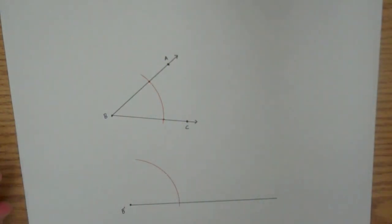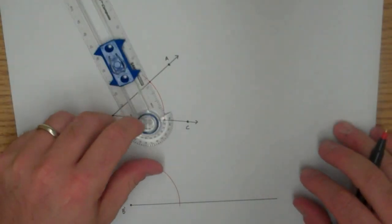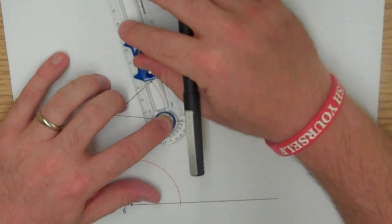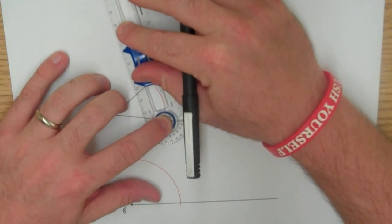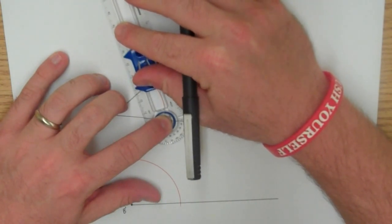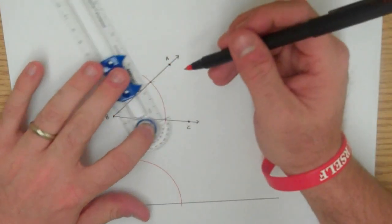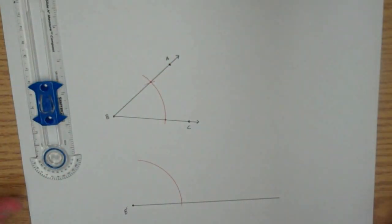And if you recall from constructing congruent line segments, when I use the word measure, I mean I'm going to open up my compass that length. So I'm going to put the point of my compass right here on this intersection point, and I'm going to open it as wide as the other intersection point. And to demonstrate, I'll draw an arc right there, and you can see that it goes right through that point.